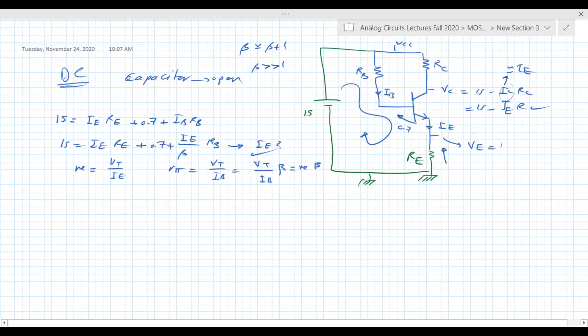If you want VB, you can determine it in many ways. It's equal to VE plus 0.7, or it's equal to VCC minus the voltage drop on RB. So you have many ways to get VB. That's basically the DC part of the problem.